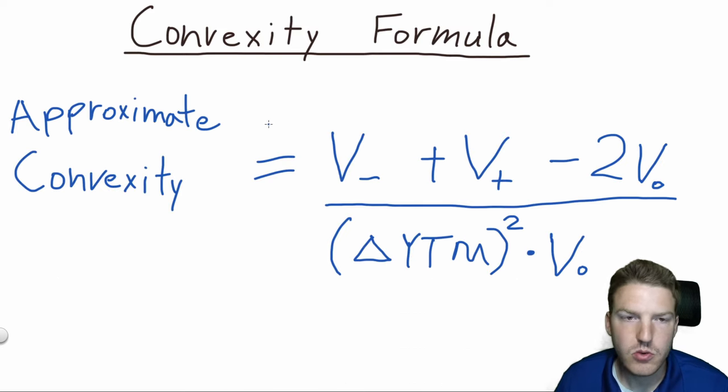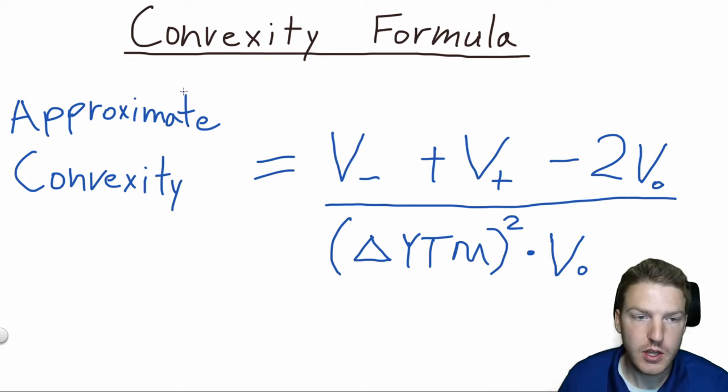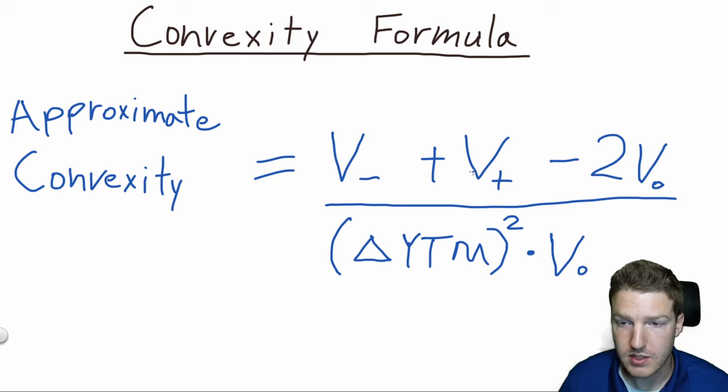In order to find the value of approximate convexity, we need to look at the change in the value of the bond as the yield to maturity or the interest rates change. So here I'll explain the numerator. This V negative is just the value of the bond when interest rates fall, plus this V positive, which is the value of the bond when interest rates rise,